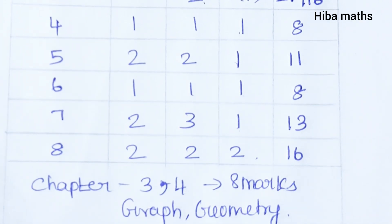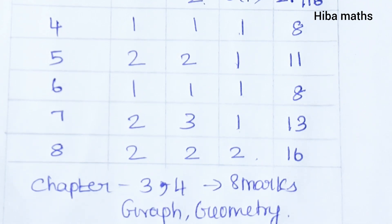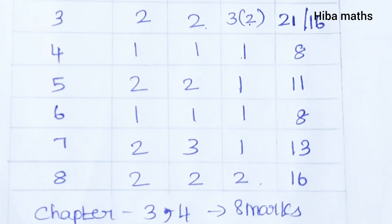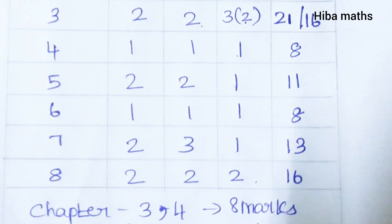The graph and geometry section requires you to write a number of points. You can see the scale and plot points correctly. You can see the 10th mark. You can see the first paper in a screenshot and check it during your exam time.